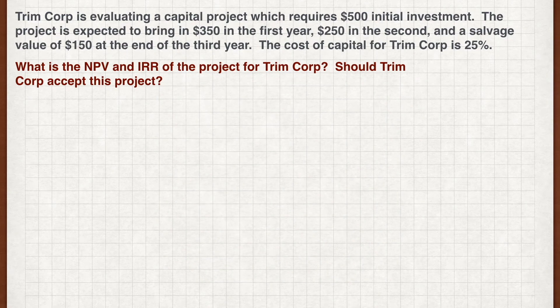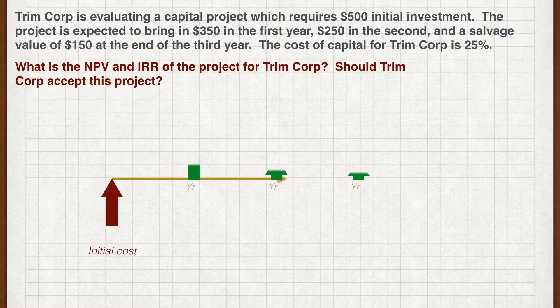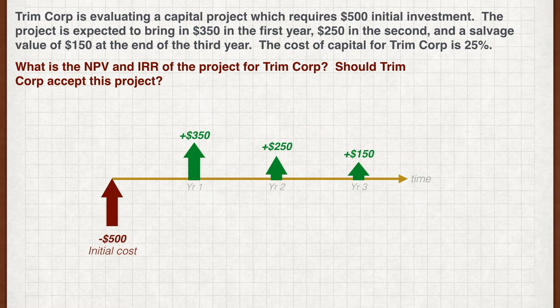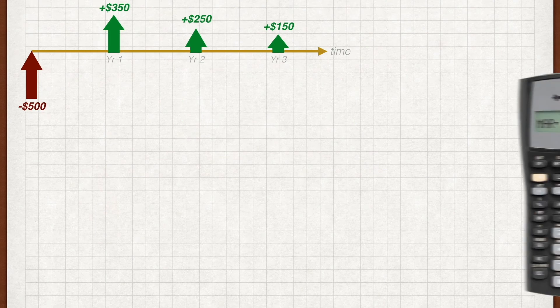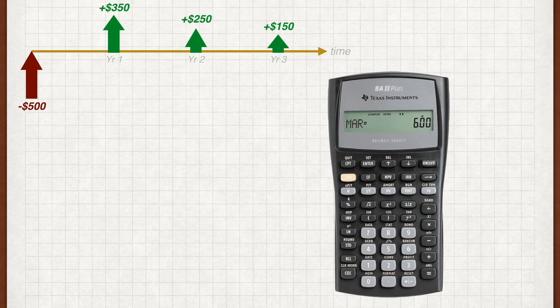For a start, let's draw out the sequence of cash flows for the project. You may have worked out the NPV and IRR using the fundamental approach that we went through and that's fine. What we're going to learn here is how to use the Texas Instrument BA2 Plus calculator to make the calculations. Check your answers against the calculator and see if you got them right.